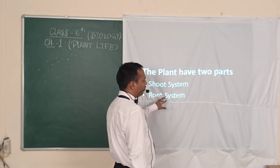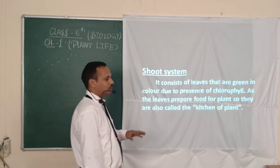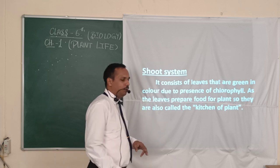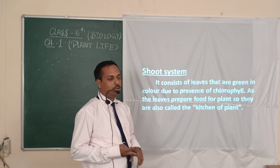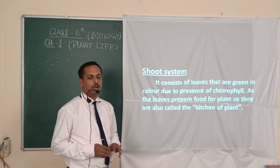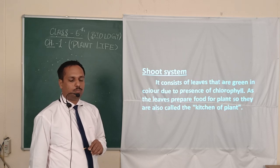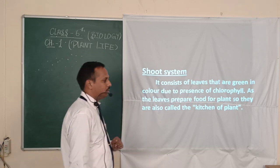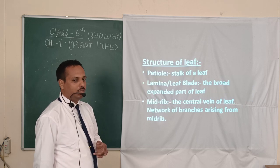When we look at the main part of the plant, that is the shoot system, it consists of leaves. Leaves are green in color due to the presence of chlorophyll and they process food for the plant. Due to that, while they are processing the food, they are known as the kitchen of the plant.